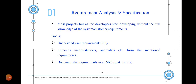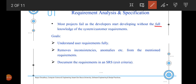The requirement analysis and specification phase is the particular phase in a software development lifecycle responsible for gathering the requirements from the customer, analyzing them, and specifying them in a particular document. Most projects fail as developers start developing without full knowledge of the system or customer requirements. It is essentially important for developers and customers to come to a common conclusion related to the various functionalities the software might offer.